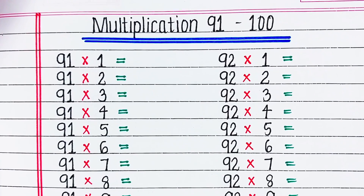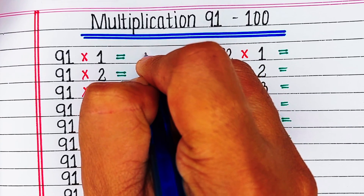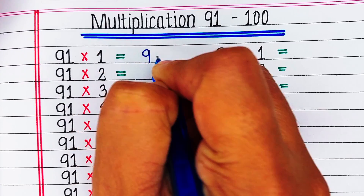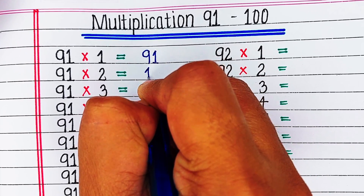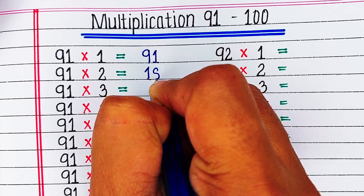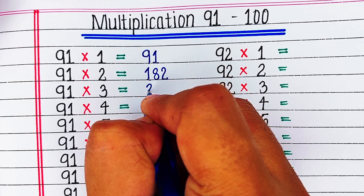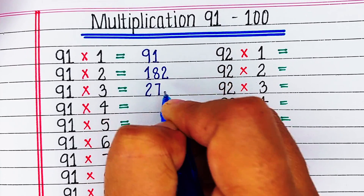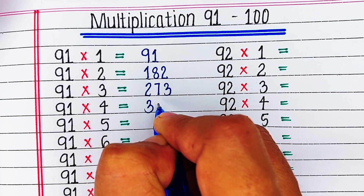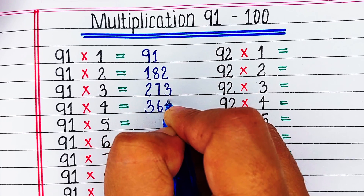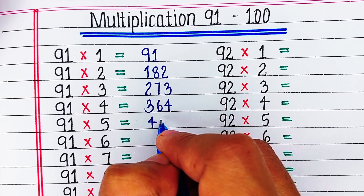Hello viewers, welcome to our channel Try to Learn. In this video we will learn and write multiplication tables from numbers 91 to 100. If you find this video helpful, please hit the like button and for more such videos consider subscribing to our channel Try to Learn. First is the table of 91.